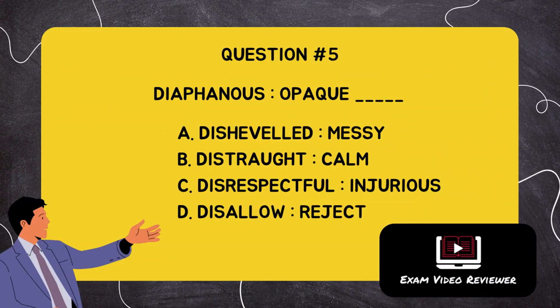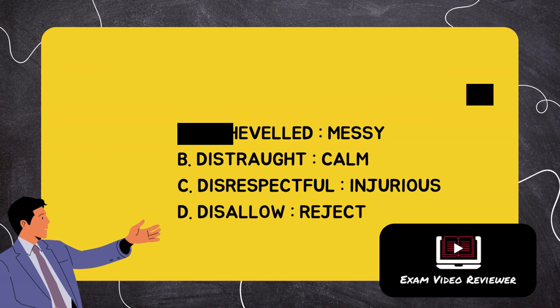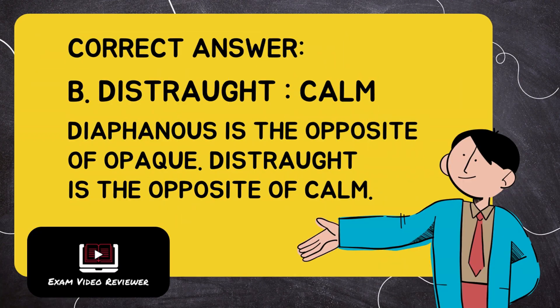Question number five: diaphanous is to opaque as blank. Letter A: disheveled is to messy, Letter B: distraught is to calm, Letter C: disheveled is to reject. The correct answer is Letter B, distraught is to calm. Diaphanous is the opposite of opaque; distraught is the opposite of calm.